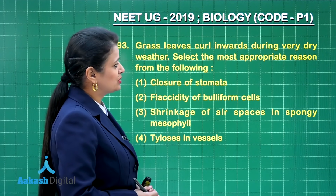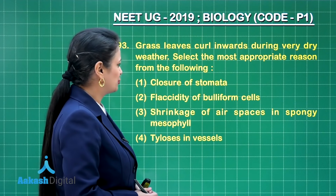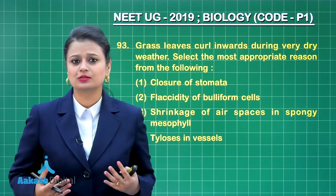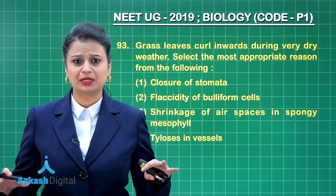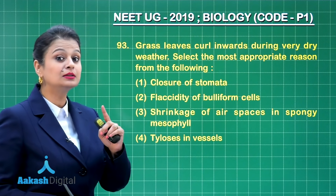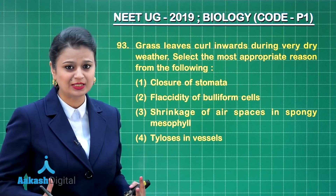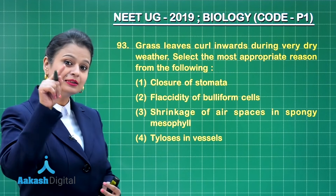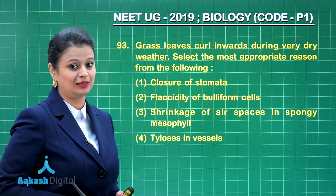Grass leaves curl inwards during very dry weather. Under dry conditions, chances of water loss increase. Grass has several adaptations to reduce water loss, and one of them is curling of leaves. Curling of leaves decreases surface area, which decreases water loss. This curling occurs due to flaccidity of bulliform cells.